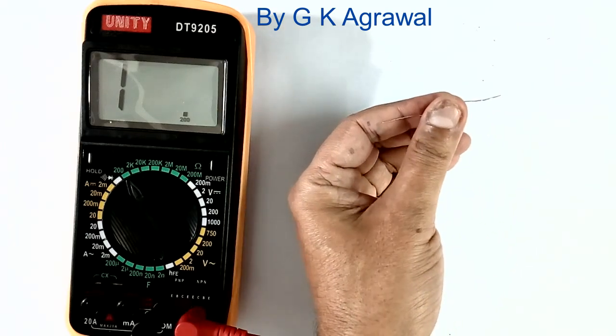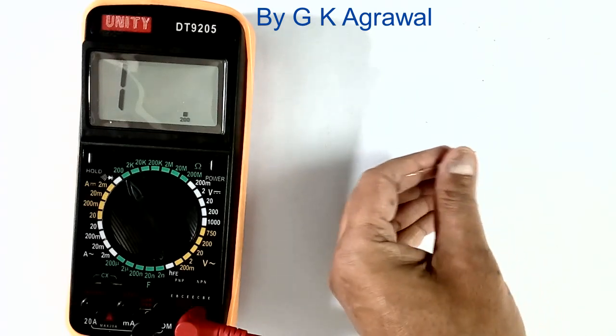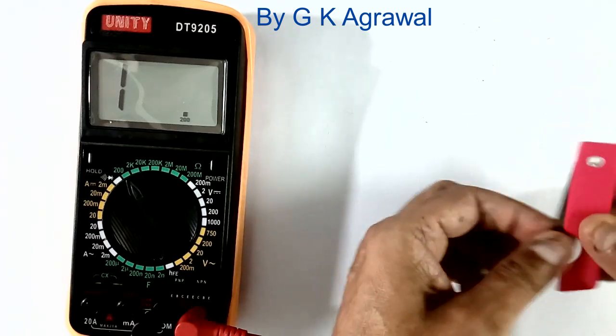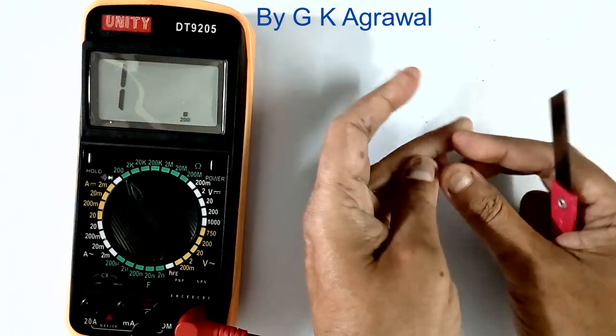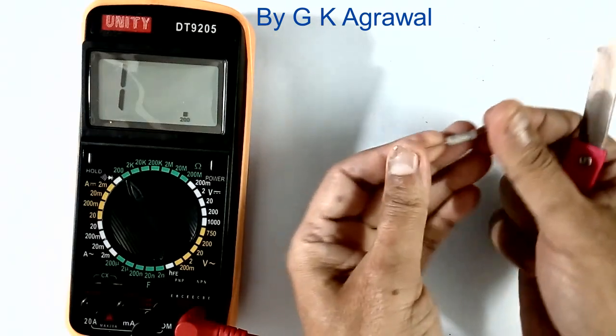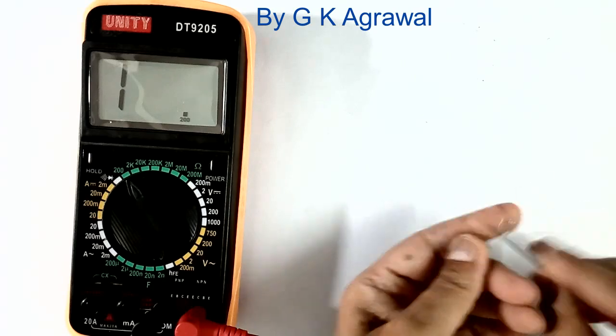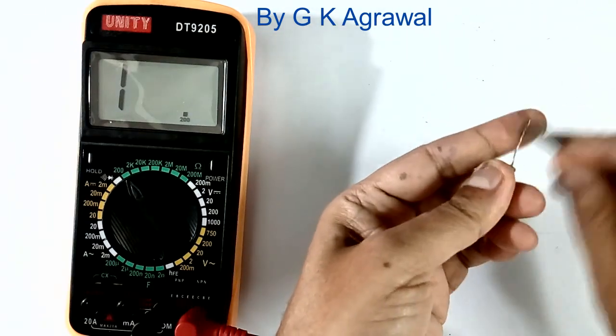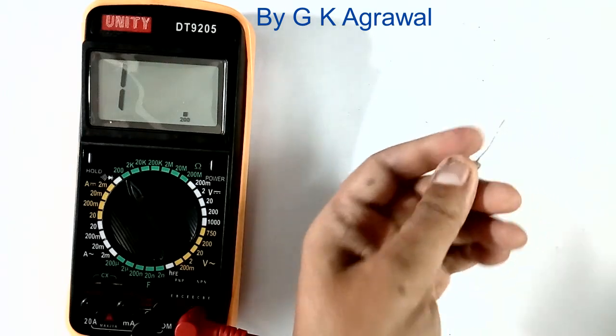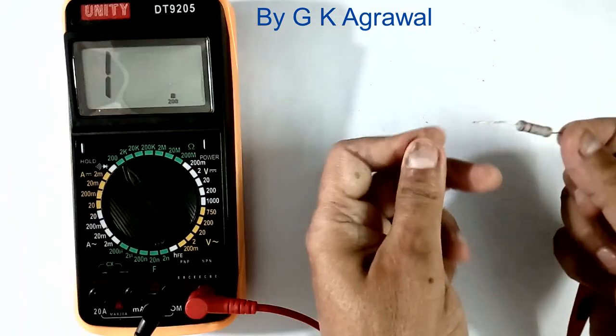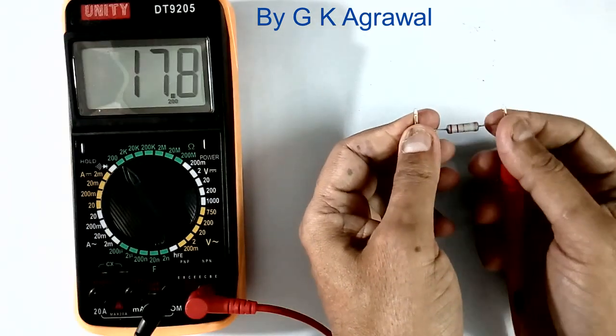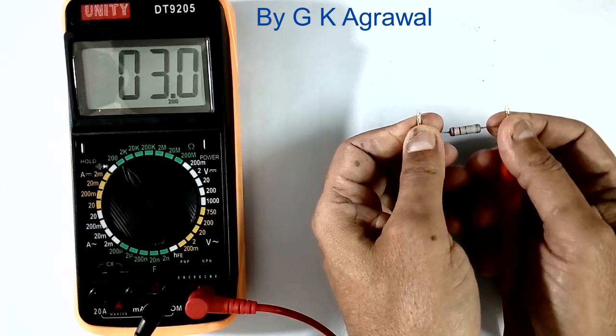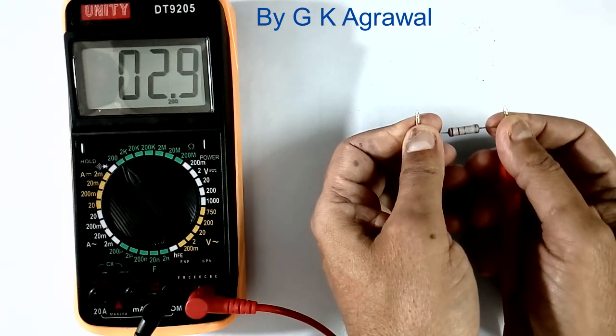This is the resistor. Because the resistor value is very less, then what will we do? Here leads have contact resistance. These leads have lot of dust, so we clean it like this. So I have cleaned now. Now we will measure the resistance. It is coming 2.9 ohms.